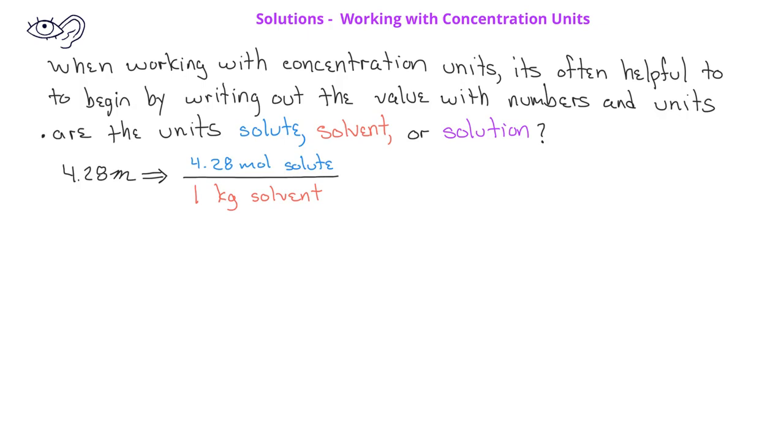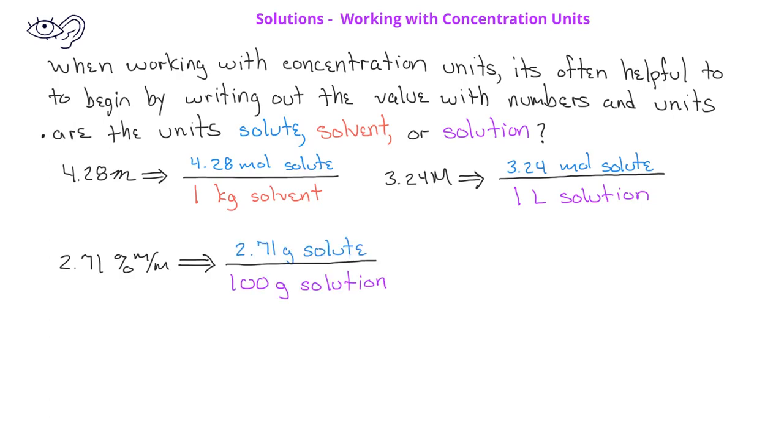In the same way, if a word problem gave you a 3.24 molar solution, you could write this as 3.24 moles of solute over 1 liter of solution. If the problem gave you a 2.71 mass percent solution, you could write this as 2.71 grams of solute divided by 100 grams of the solution.